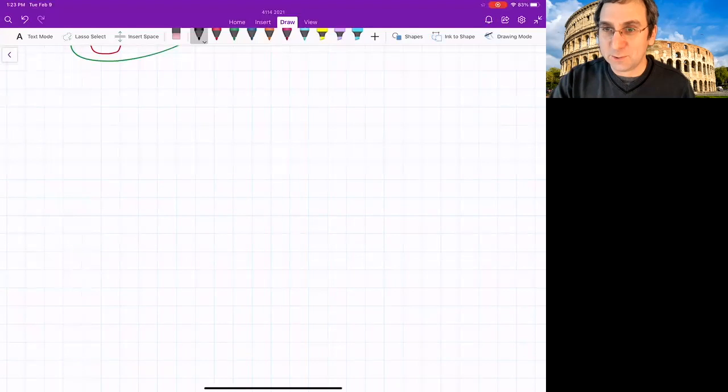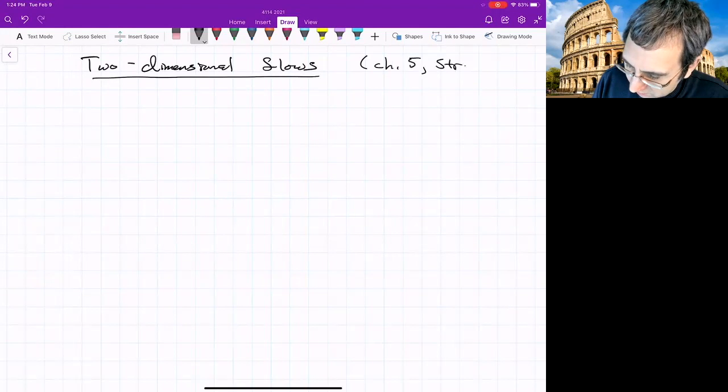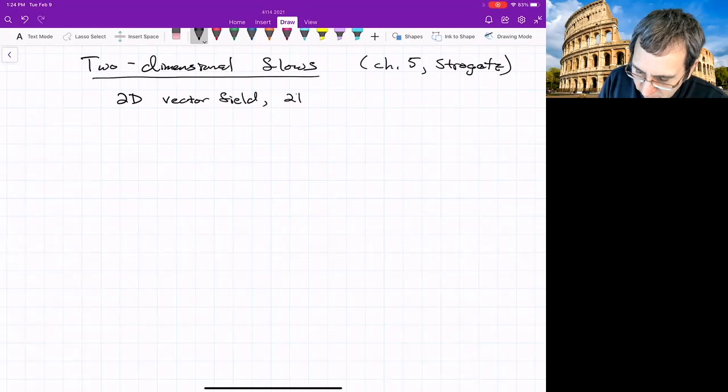So now we're going to talk about 2D flows. I think this is chapter 5 of Strogatz. We're thinking of a 2D vector field, 2D ordinary differential equations.